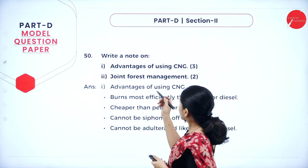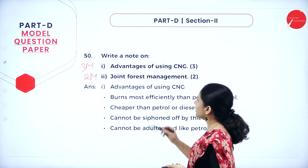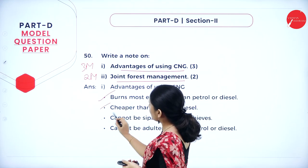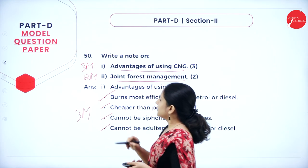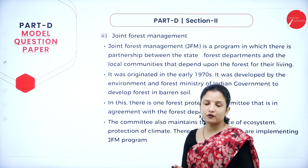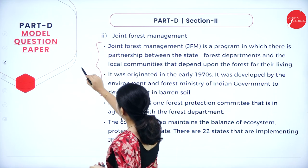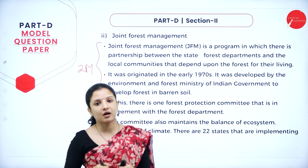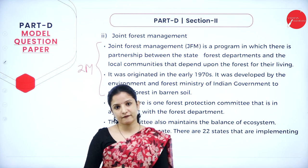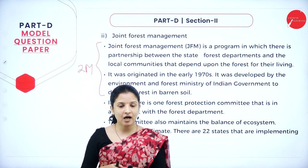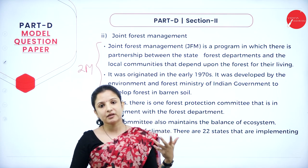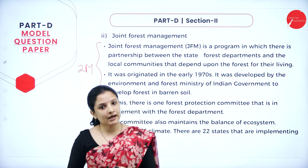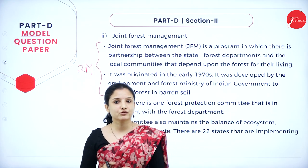Next question: write a note on advantages of using CNG (three marks) and joint forest management (two marks). Write three or four points on CNG advantages for three marks, and two points on joint forest management for two marks. This is how you need to write your entire question paper. Write question numbers correctly, read questions completely before answering, and don't be in a hurry. For example, if a one-mark question asks about pyramidal bases present in both RNA and DNA, reading only half will lead to a wrong answer.